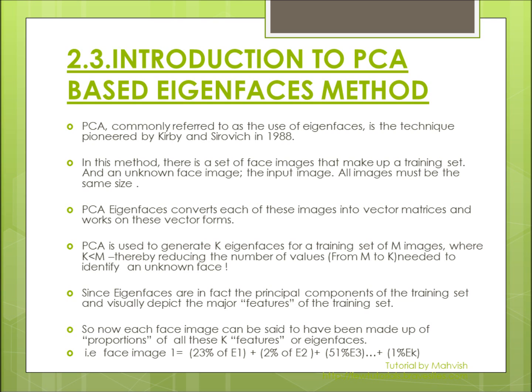In this method, there is a set of face images that make up a training set, and an unknown face image — that is, the input image. All these face images must be the same size, that is, of the same dimensions. For example, if training set images are of size 50 by 50, then the input image, the unknown face image, must also be of size 50 by 50.